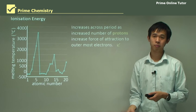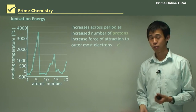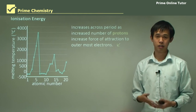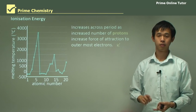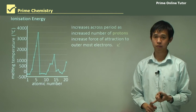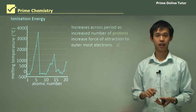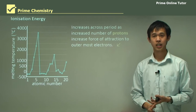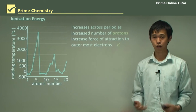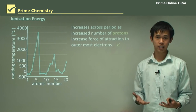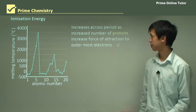So that wraps up today's lesson on the physical properties of elements in the periodic table. We looked at boiling and melting point, electrical conductivity, and first ionization energy. We'll now move to the question segment and hopefully you'll be able to explain all these trends and use them to answer these questions.